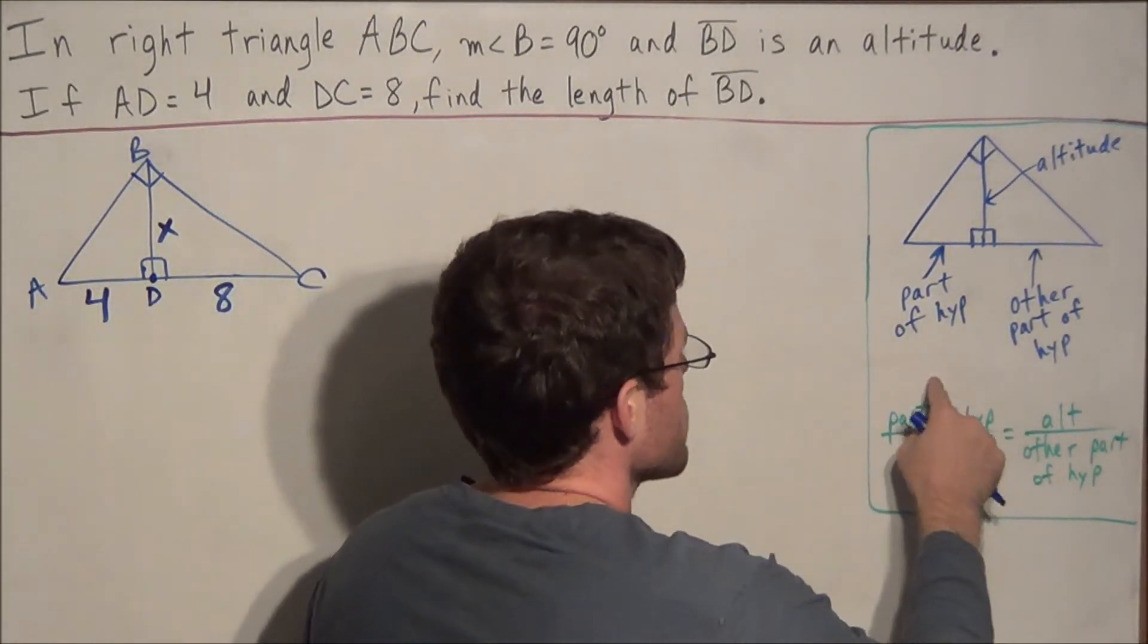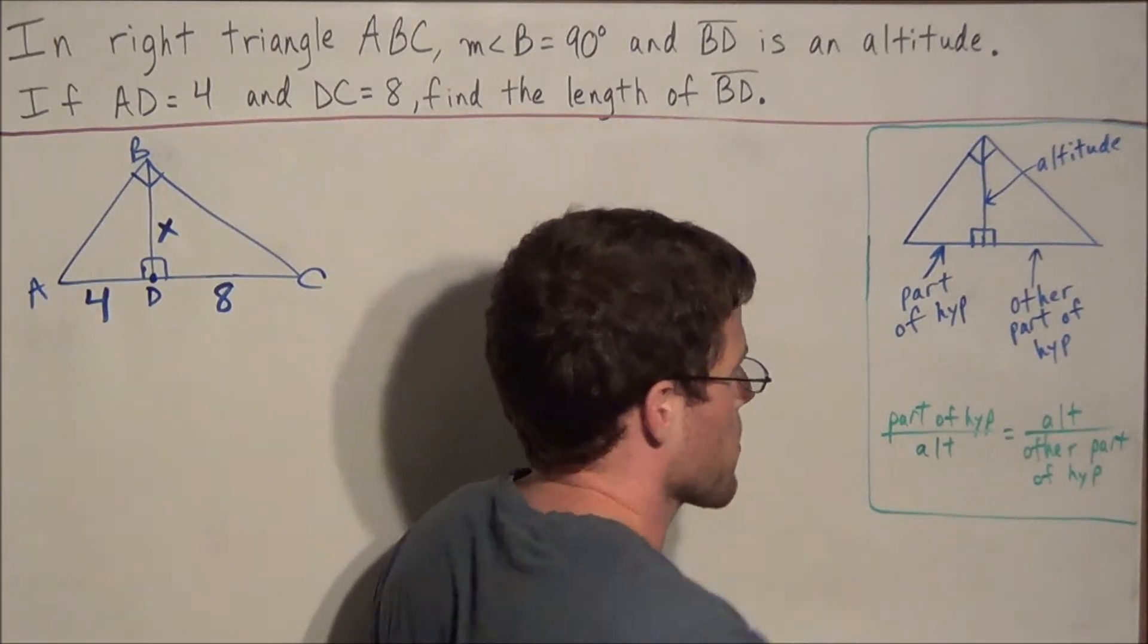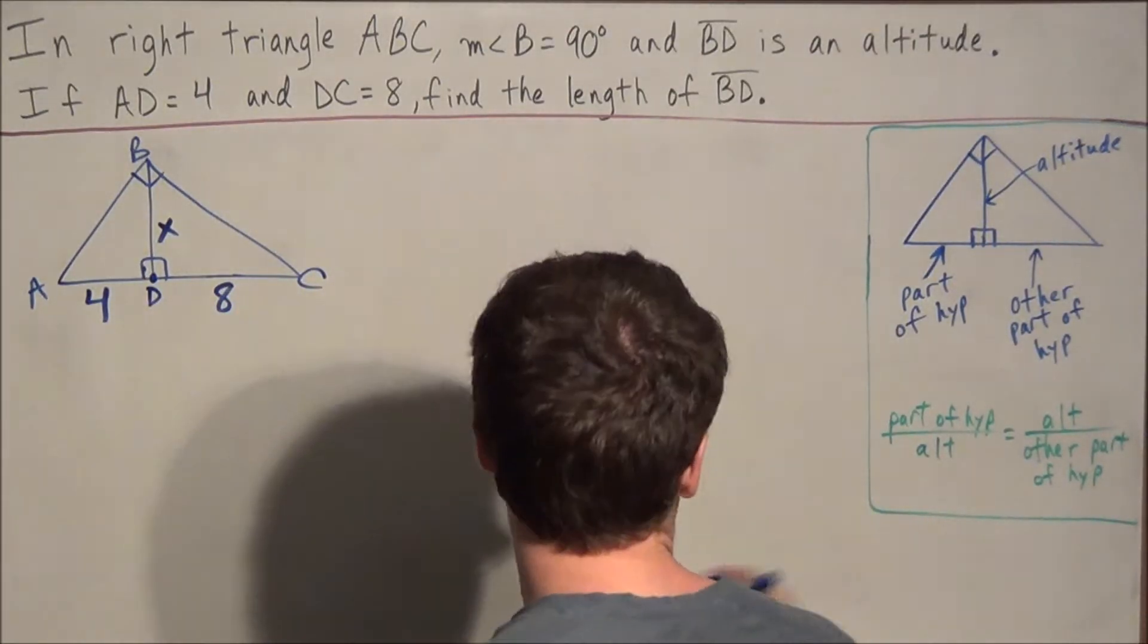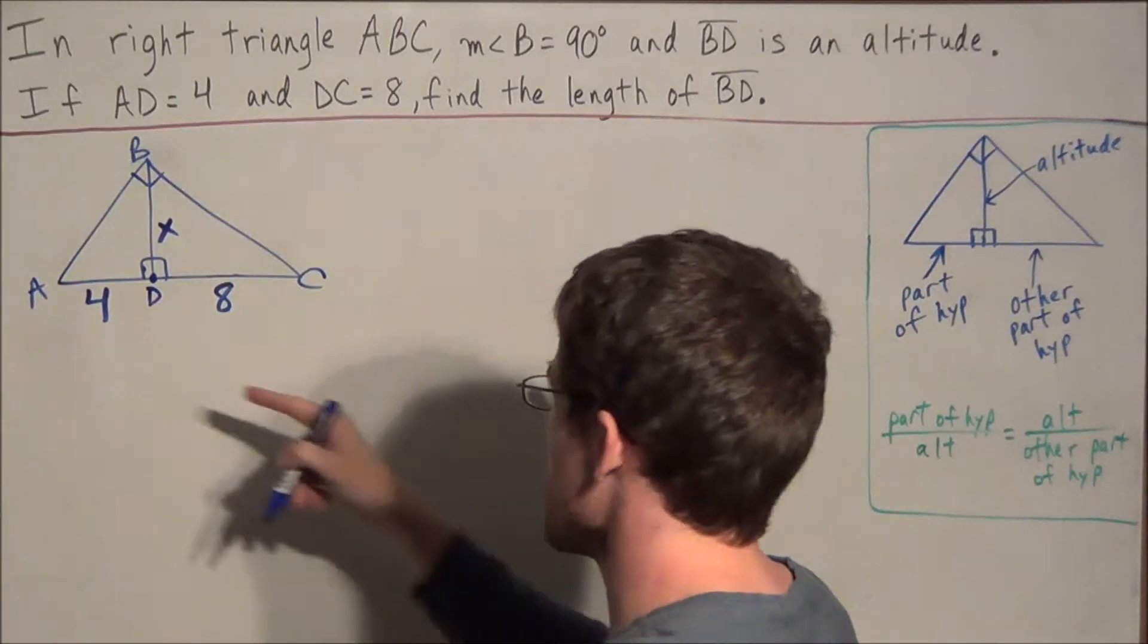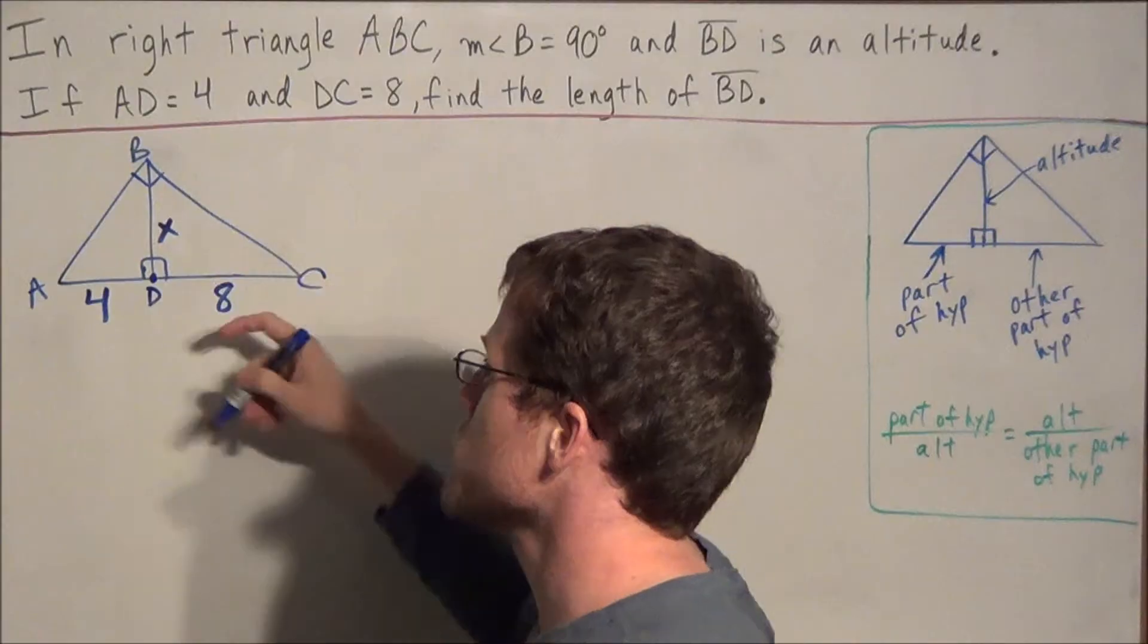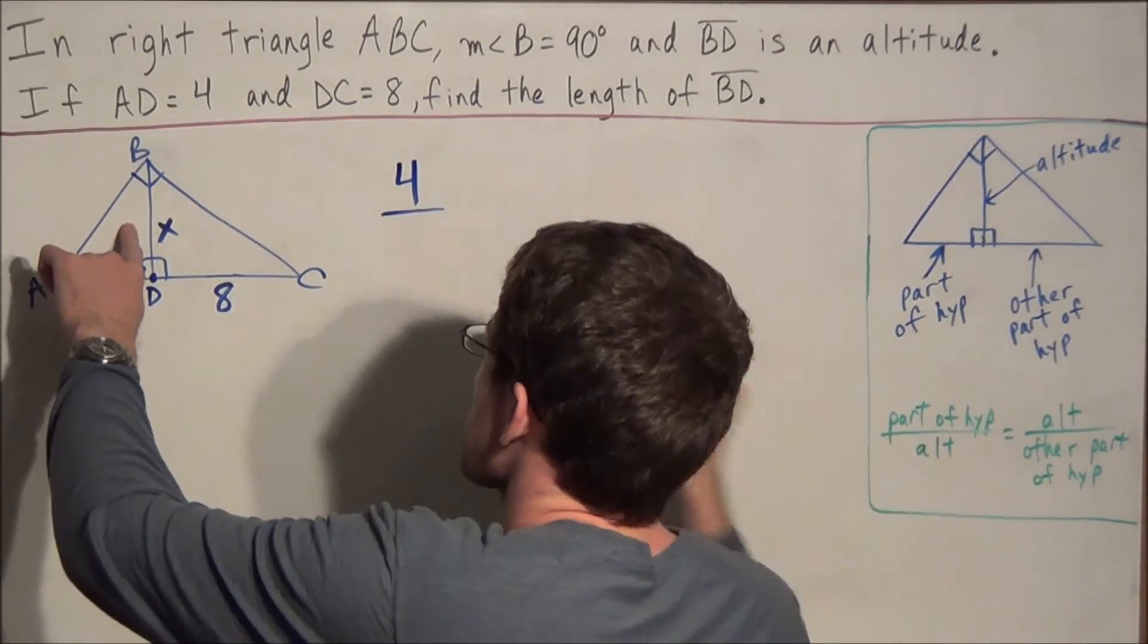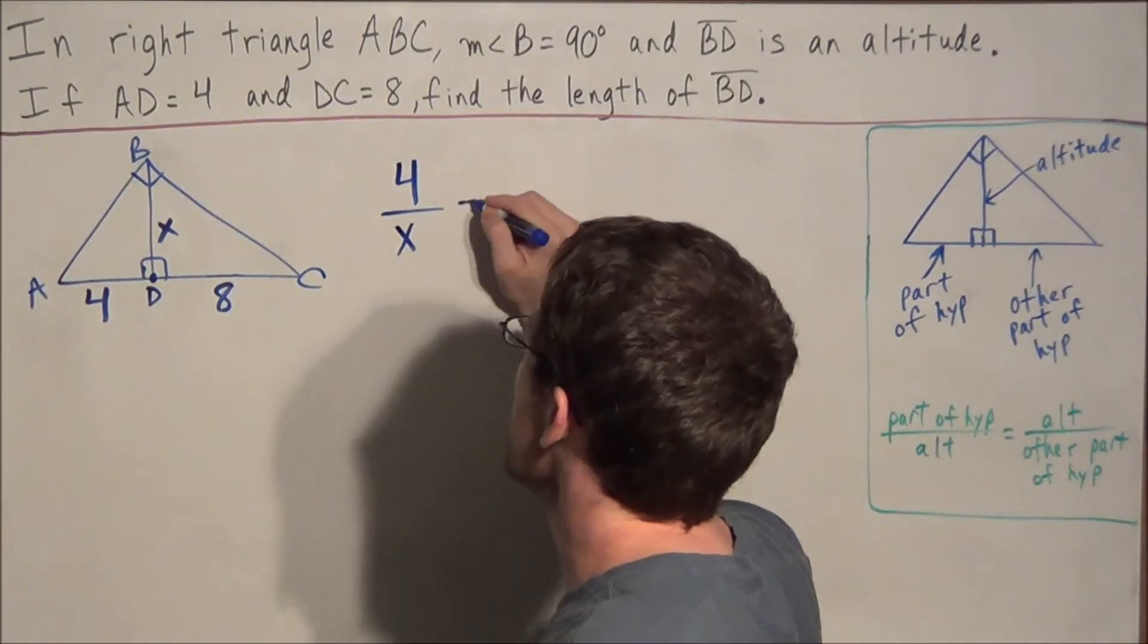We have part of the hypotenuse over the altitude equals the altitude over the other part of the hypotenuse. So if we apply that to this example, we're just matching up the terms. 4 represents one part of the hypotenuse of the big right triangle. So we have 4 over the altitude, in this case X, that's what we're trying to find, equals